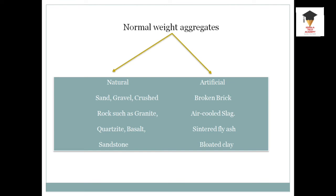Examples of artificial aggregates include broken bricks, air-cooled slags, sintered fly ash, and bloated clay. These are artificial aggregates.